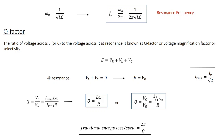There are two important parameters associated with resonance: the Q factor and the bandwidth. The Q factor is defined as the ratio of voltage across the inductor or capacitor to the voltage across the resistor at resonance. At resonance, voltage across the inductor and voltage across the capacitor are both the same, so Q is defined as either VL/Vr or VC/Vr.